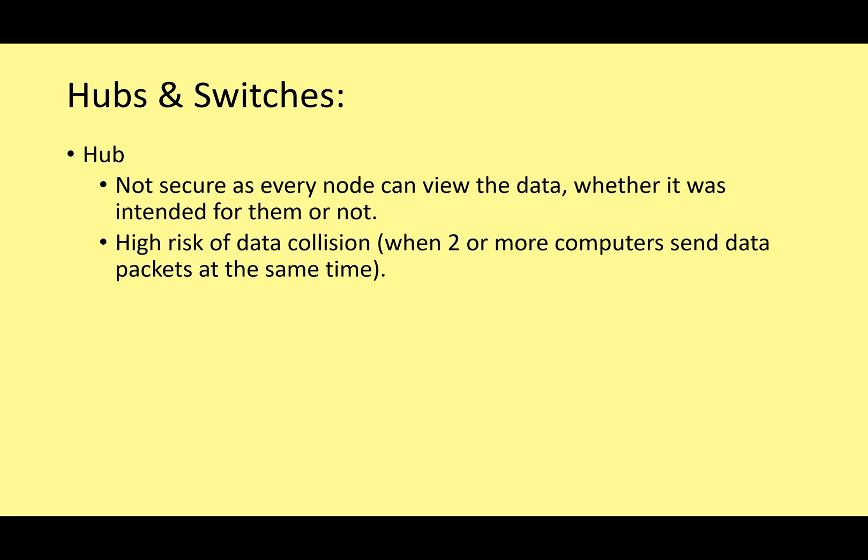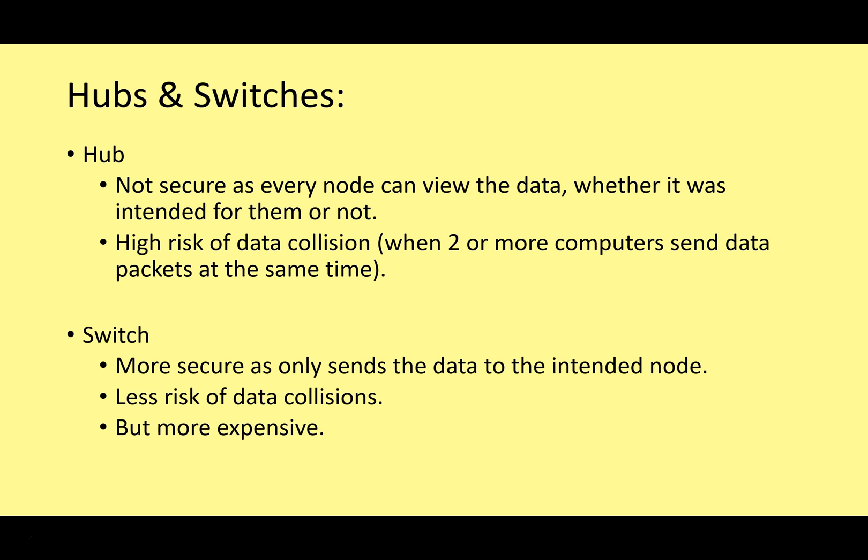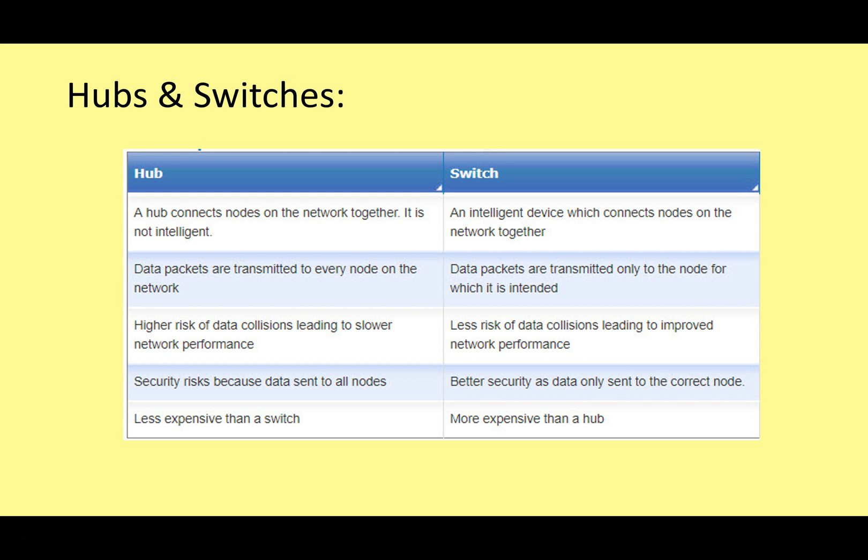Hubs are not secure, as every node can view data whether it's intended for them or not - you don't want anybody else reading your emails. There's also a high risk of data collision, which is when two or more computers send data packets at the same time; they crash together and that data can be lost. Switches are more secure as they only send data to the intended node, and there's less risk of data collisions because less data is transmitted across the network - though switches can be more expensive.